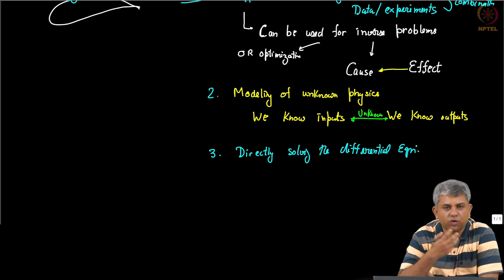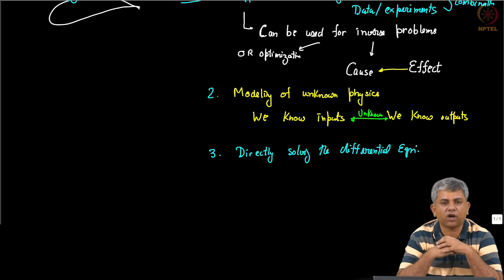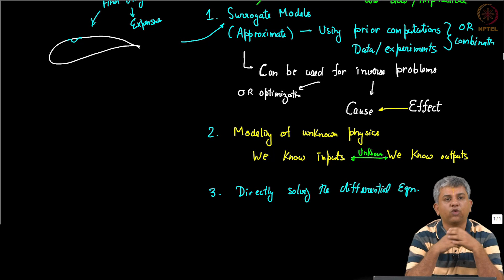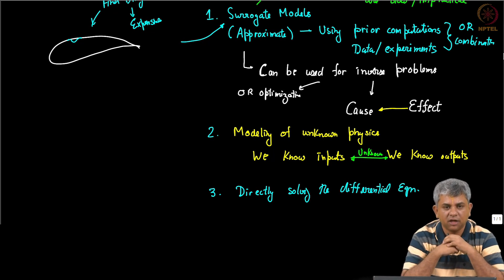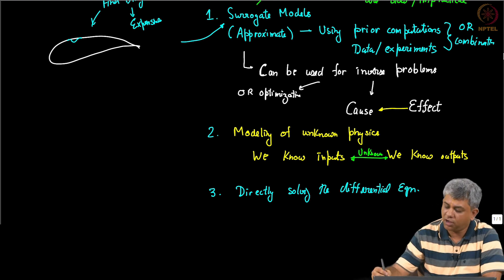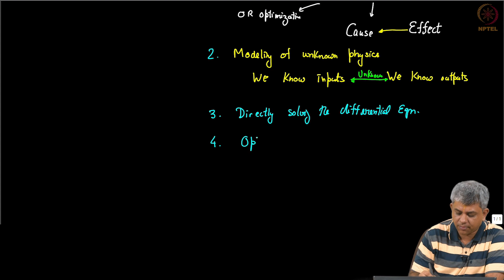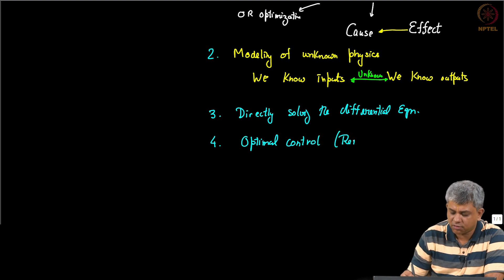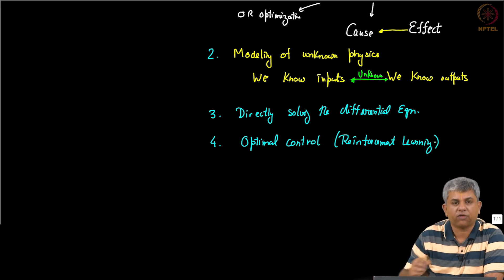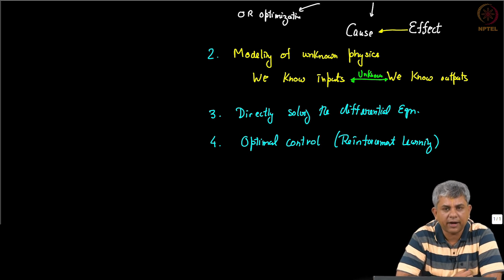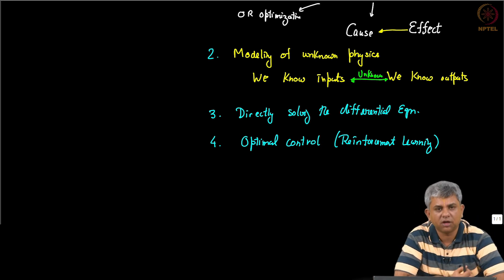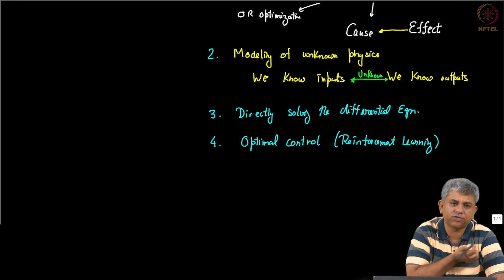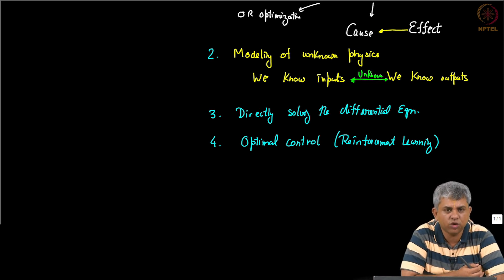There are also cases where you can use neural networks to directly solve differential equations — you can have a neural network actually solve a differential equation by itself. These are very standard things we tend to do in engineering and science. You can also have control problems, where typically reinforcement learning is useful. For example, Professor Andrew Ng several years ago did control of a model helicopter using deep learning ideas. These are some of the uses within engineering and science.